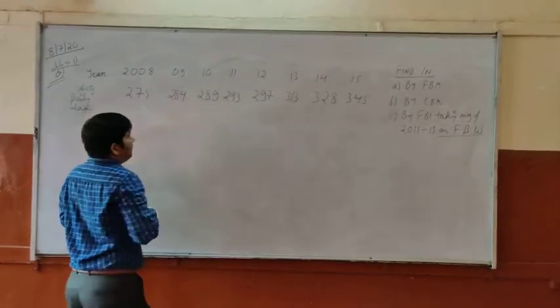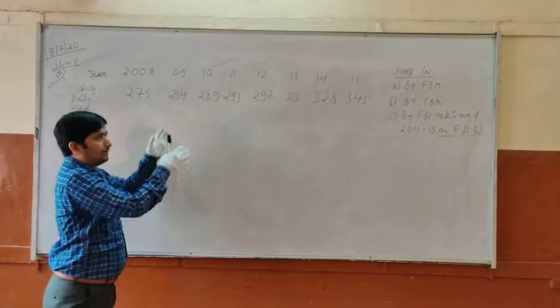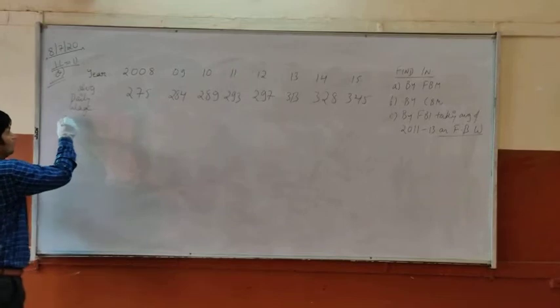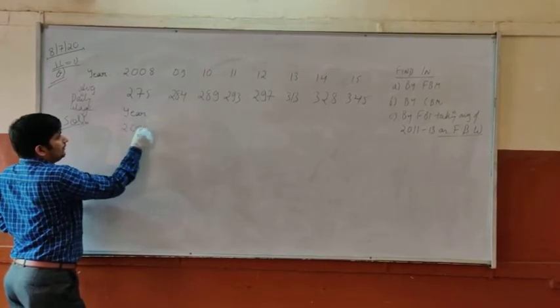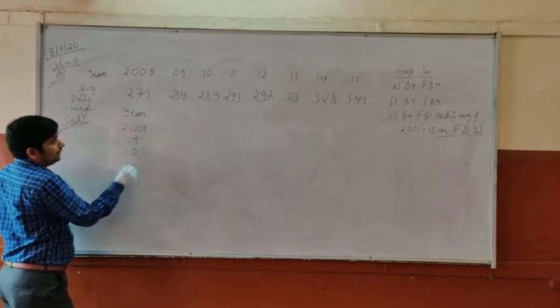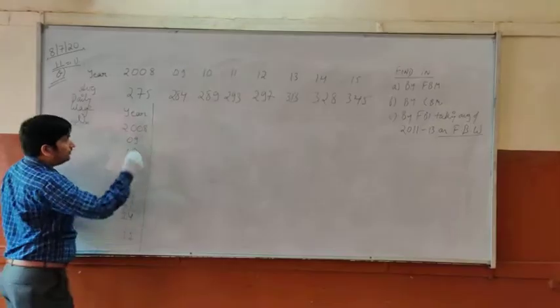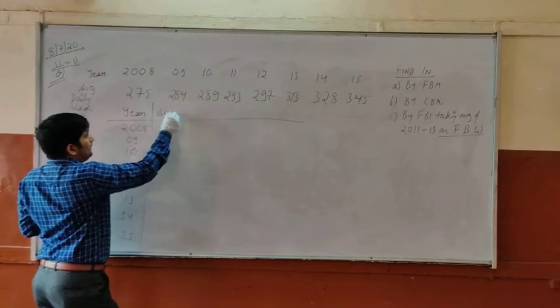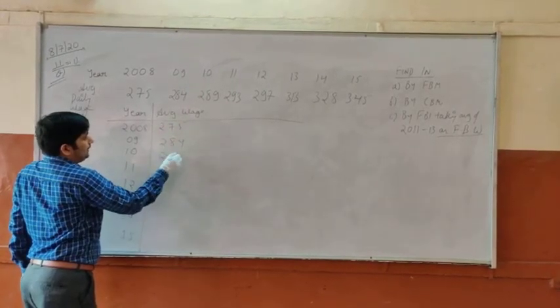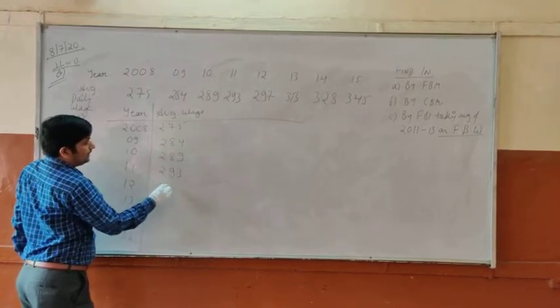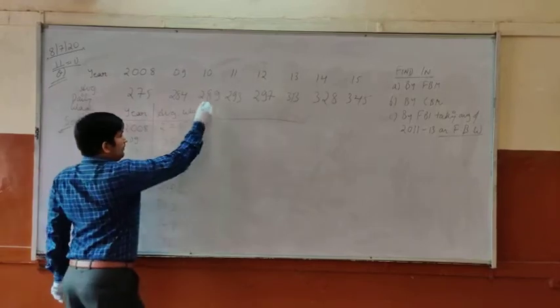Now the first thing, while solving the question, while giving solution, this horizontal chart was given. You have to make the vertical chart. So I am writing this data vertically. See now, 2008, 9, 10, 11, 12, 13, 14, 15. Average daily wage: 275, 284, 289, 293, 297, 313, 328, 345.